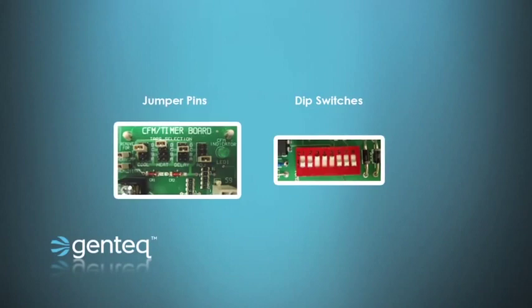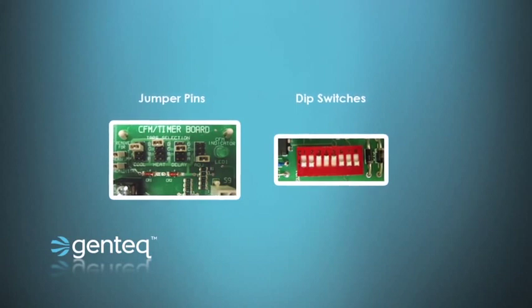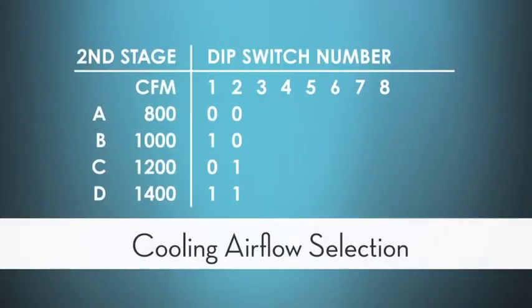The HVAC manufacturer will put on their circuit boards in the furnace, air handler, or package system — dip switches, jumper pins, dials, or even model plugs — that will allow you to select the proper airflow for heating, cooling, constant fan, dual fuel systems, electric strips, every airflow point that needs to be set up in that system, and your enhanced comfort options. The charts used to set those switches look like what you see here — and this is just an example, as every manufacturer does their charts a little differently.